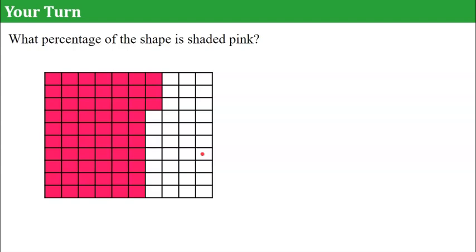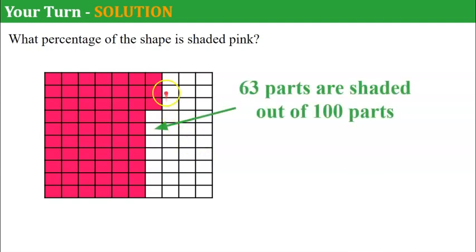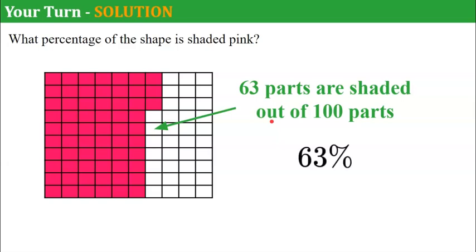Your turn. I would like you to determine what percentage of this shape is shaded pink. Go ahead and pause, come back when you're ready. Welcome back. So I hope you decided that there were 63 parts — 60 entire columns plus 1, 2, 3. So 63 parts of the whole 100 are shaded pink, giving us 63% of the illustration is shaded pink.